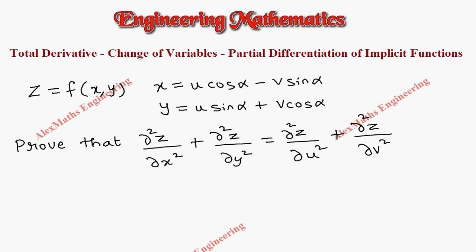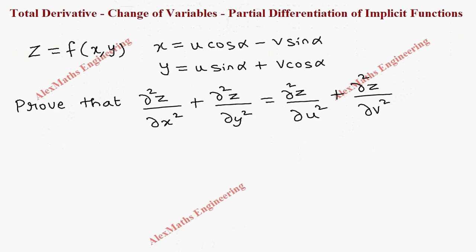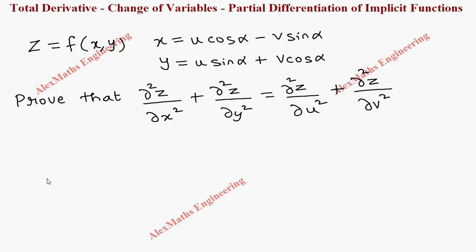Hi students, this is Alex here. In this video we have given a function z which is in terms of x and y, where x is u cos alpha minus v sin alpha, and y is u sin alpha plus v cos alpha. We have to prove this expression.